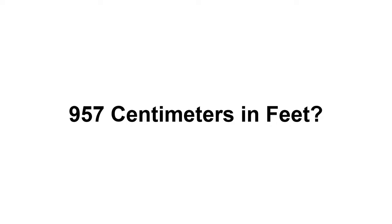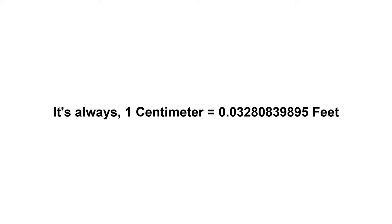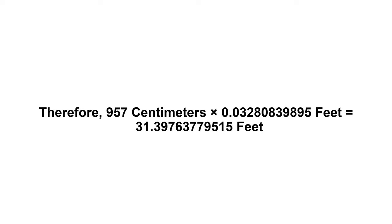957 centimeters in feet. First of all, we need to know the value of one centimeter in feet. One centimeter equals 0.03280839895 feet. Now we have to multiply 0.03280839895 by 957. Therefore, 957 centimeters times 0.03280839895 feet equals 31.39763779515 feet.